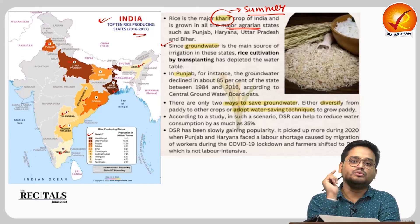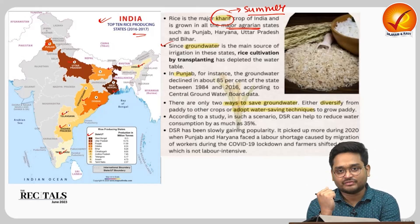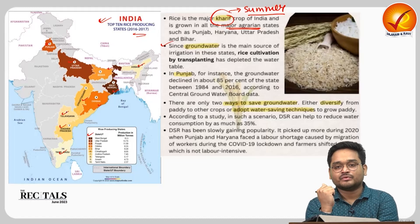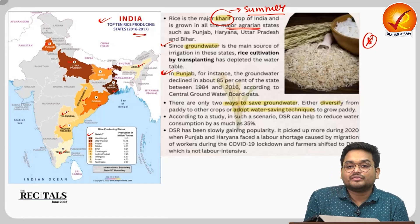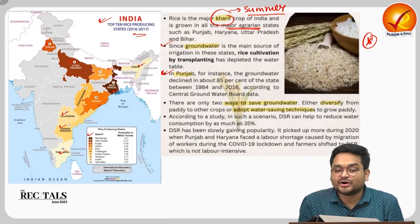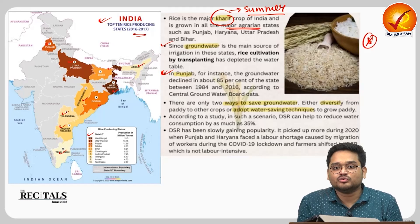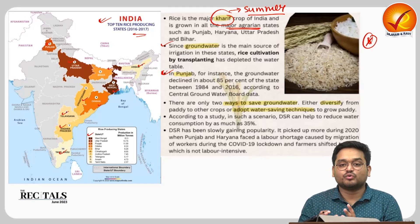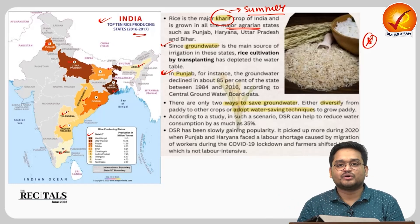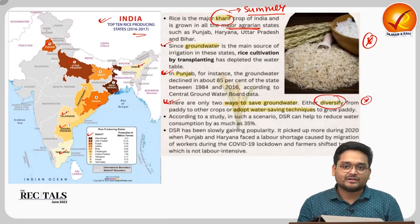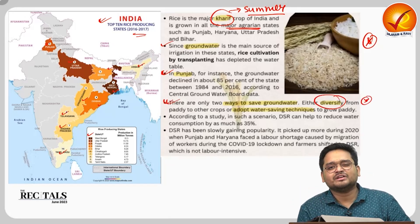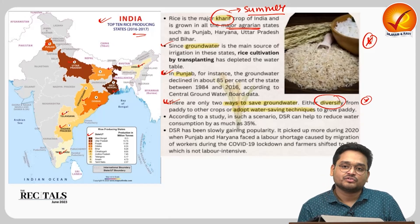This groundwater crisis is mostly attributed to heavy cultivation of rice. We have to understand that rice can be cultivated in many ways, and the huge amount of water used in rice cultivation is actually to prevent the growth of weeds — water is essentially being used as a herbicide.